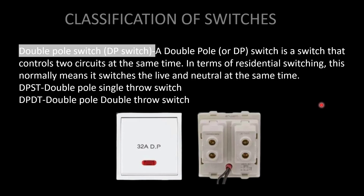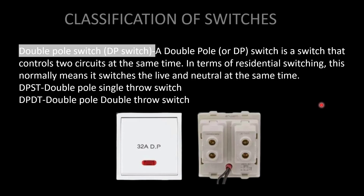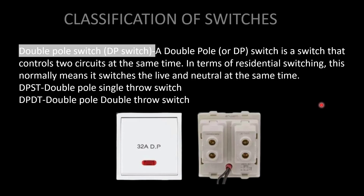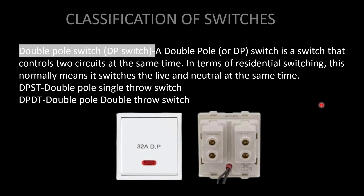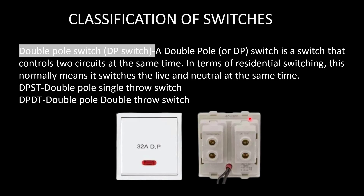A DP switch is used to control two circuits, or to switch the phase and neutral at the same time. In an SP switch, we can control only the phase conductor — only one wire comes to the switch. In a DP switch, we can control either two circuits or phase and neutral together. For kitchen equipment, DP switches are normally used. DP switches also come in two types: DPST (double pole single throw) and DPDT (double pole double throw).